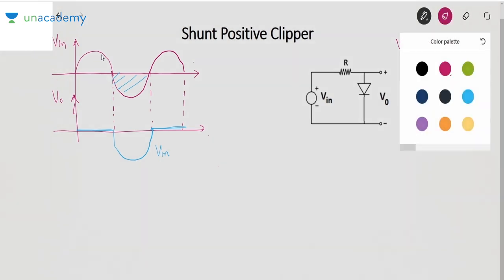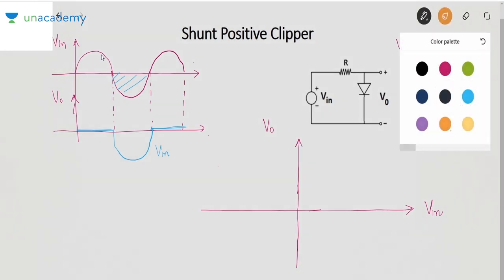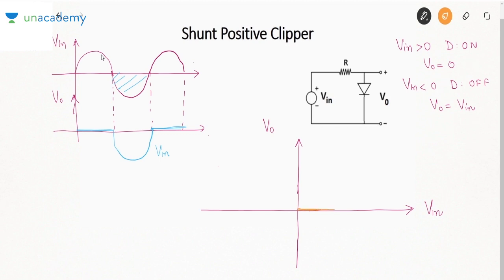Now we draw the transfer characteristics: V_out vs V_in. When V_in is positive, V_out is zero. When V_in is negative, V_out equals V_in, which is a straight line of slope equal to one. This is the transfer characteristic of the shunt positive clipper.